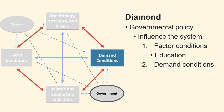Next we shall consider the government's effect on demand conditions. Government procurement can be a positive force for upgrading national competitive advantage if they provide early demand for advanced new sophisticated products or services from local firms. An example is the Danish government's early decision to pay for hearing aids for those who needed them. This was an important reason for the international success of Danish firms in this industry.